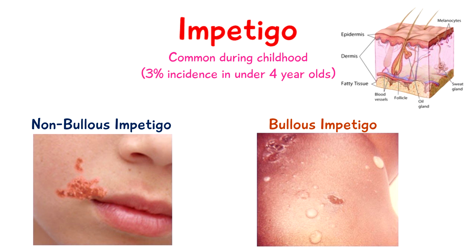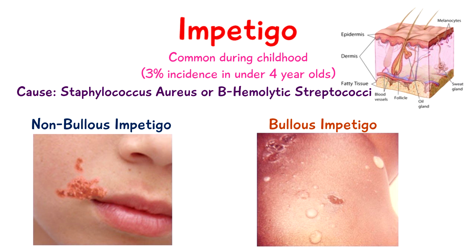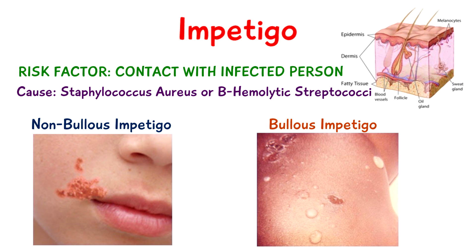Impetigo is very common during childhood — in fact there's a three percent incidence rate in children under the age of four years old. The most common cause is either an infection due to Staphylococcus aureus, which is usually the cause of bullous impetigo, but sometimes beta-hemolytic Streptococcus may be the cause. The main risk factors are contact with another infected individual and poor skin hygiene.